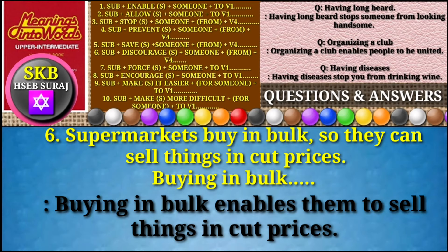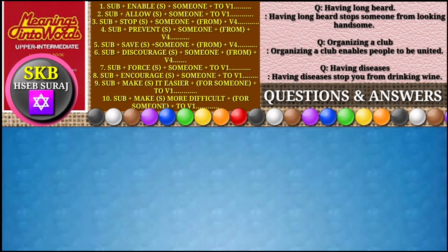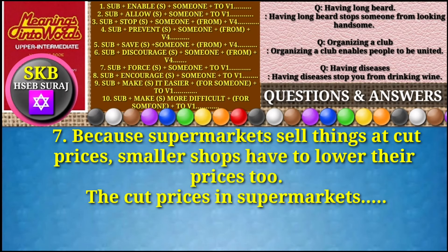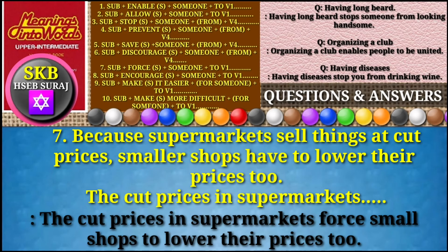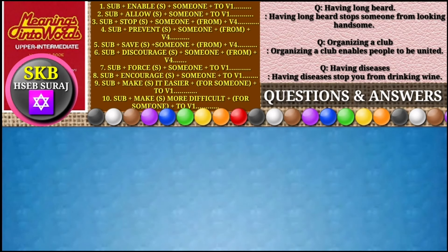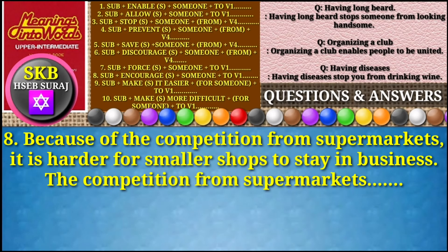Question number six: 'Supermarkets buy in bulk so they can sell things at cut prices.' Start your answer with 'buying in bulk.' Question number seven: 'Because supermarkets sell things at cut prices, smaller shops have to lower their prices too.' Answer using 'the cut prices in supermarkets.' Answer: The cut prices in supermarkets force small shops to lower their prices too.